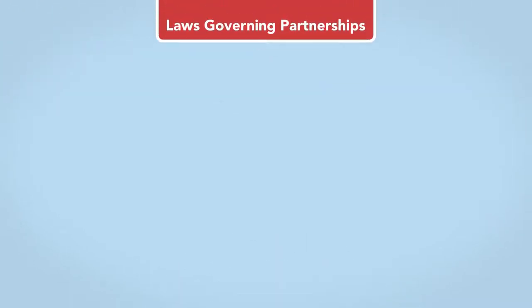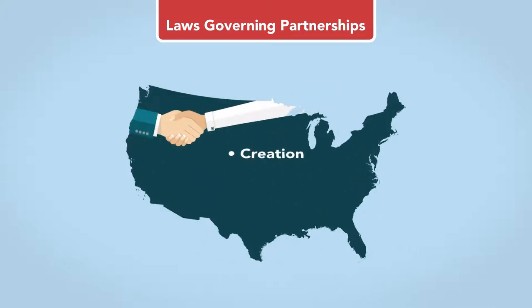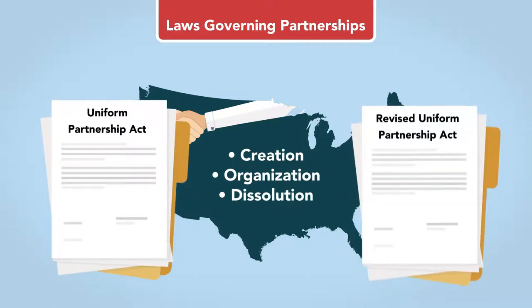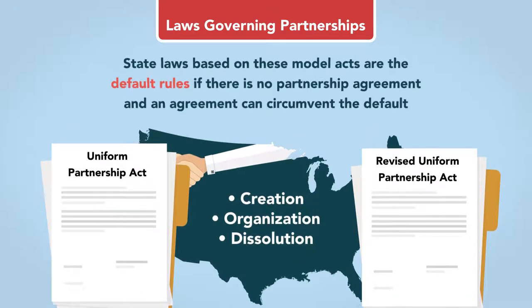Laws Governing Partnerships. States regulate partnership creation, organization, and dissolution. Model acts such as the Uniform Partnership Act and the Revised Uniform Partnership Act have helped states draft partnership laws. State laws based on these model acts are the default rules if there is no partnership agreement, and an agreement can circumvent the default.